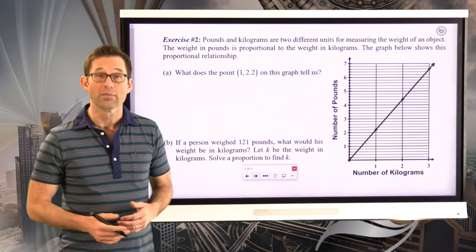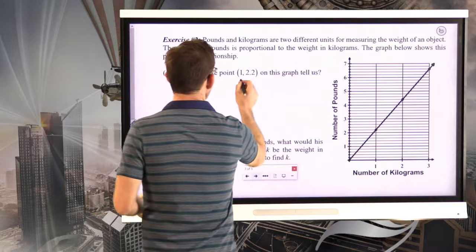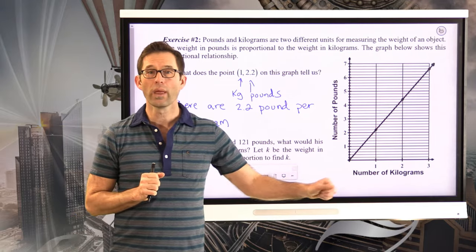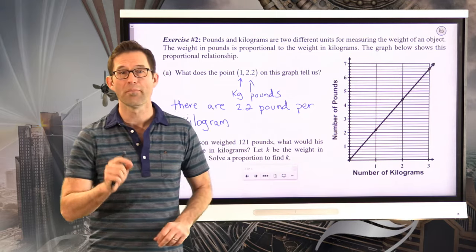All right. Well, what we would interpret is that the 1 are kilograms, the 2.2 are pounds. So we can actually interpret this as the fact that there are 2.2 pounds per kilogram. It's that unit rate. For every 1 kilogram of weight, you have 2.2 pounds of weight.